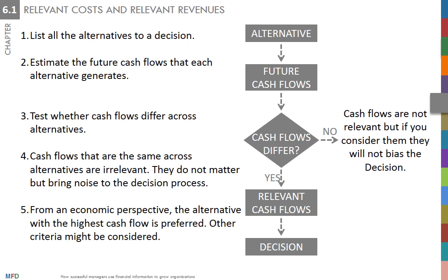However, if irrelevant costs or irrelevant revenues are included in the analysis, they will not affect the final decision. Why? Because only the difference between the cash flows of the various alternatives matters — adding or subtracting the same number from all alternatives does not change the difference between them.